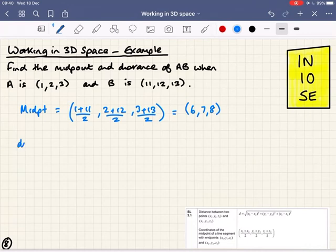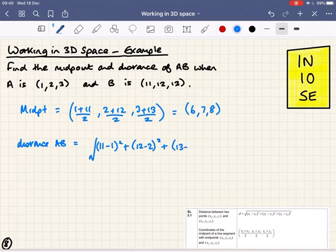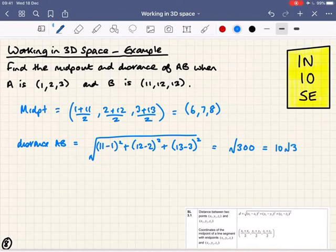And then the distance between the points a and b is going to be the square root of the differences between the coordinates. 11 minus 1 squared plus 12 minus 2 squared plus 13 minus 3 all squared. That's 3 lots of 10 squared. It's the square root of 300 altogether, so 10 root 3. And if you want that as an approximation, it's 17.3 to 3 significant figures.